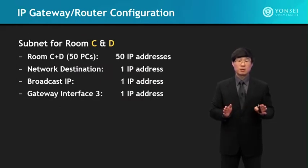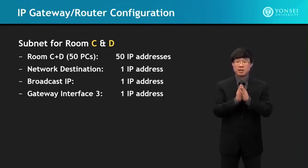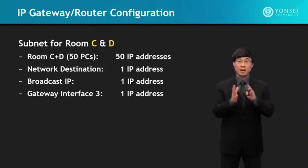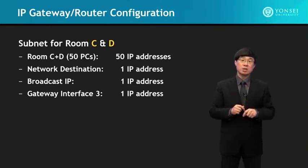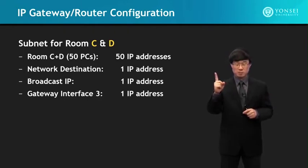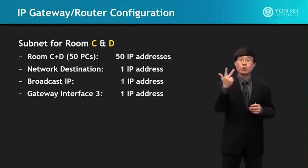We may need to assign an IP address for the hub or switch in some cases, but in this example it was not required. If needed, I would use one of the reserved addresses among the 11 unused ones — for example, the next highest one after the gateway interface address. In the next lecture, we're going to go into the IP routing table — how to set it up based on all this information, and how a packet coming into the router is filtered to go out one of the interface ports.